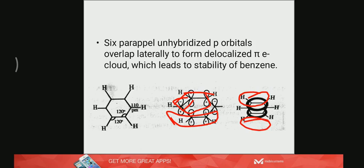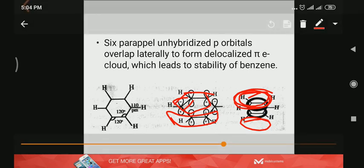These pi electrons are delocalized. It is called the pi electron ring, delocalized pi electron ring. And it is due to this delocalization that benzene becomes stable according to VBT.